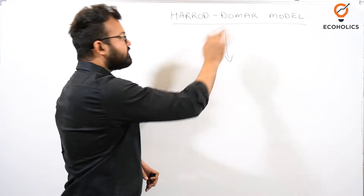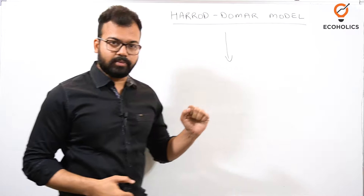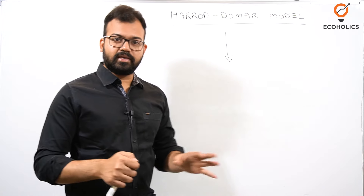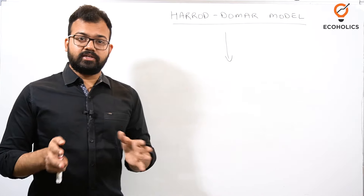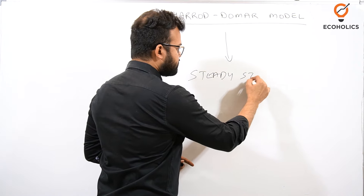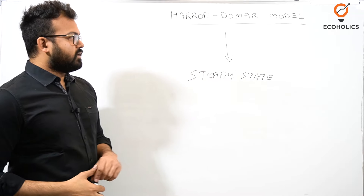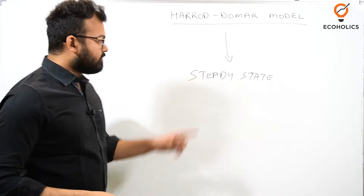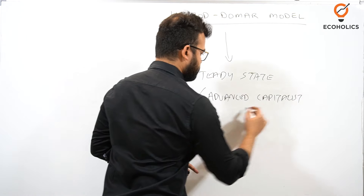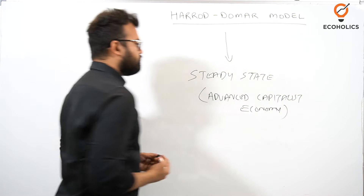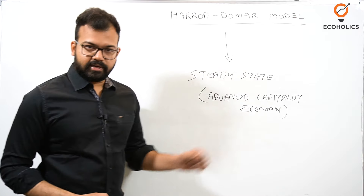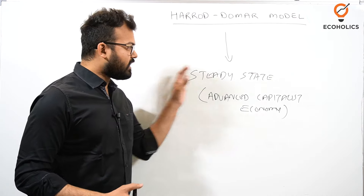The Harrod-Domar model was given by two different economists: Roy Harrod and Evsey Domar. They were working separately — Harrod in the United Kingdom and Domar in the United States of America. Although their models differ in details, their main objective is the same: to achieve a steady-state growth rate. This model was designed for advanced capitalist economies, meaning developed countries. We'll see what the important elements are and how they concluded how an economy can achieve steady-state growth.